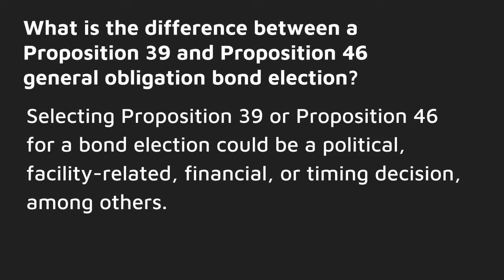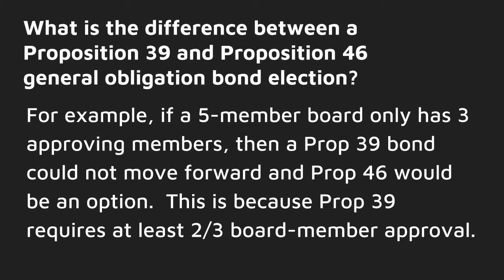Selecting Prop 39 or Prop 46 for a bond election could be a political, facility-related, financial, or timing decision, among others. For example, if a five-member board only has three approving members, then a Prop 39 bond could not move forward, and Prop 46 would be an option. This is because Prop 39 requires at least two-thirds board member approval.